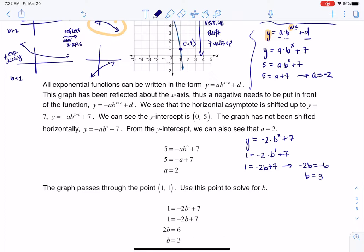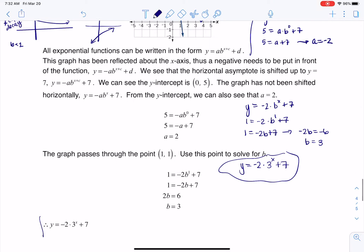So now let's see where we are overall. So we are at y is equal to negative two times three to the x plus seven. So there is my function, and that should match. Yep, there's my answer.